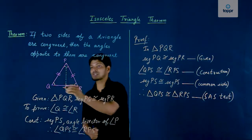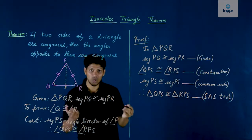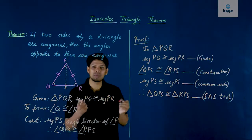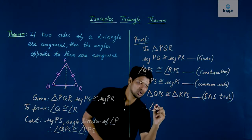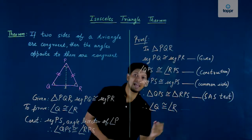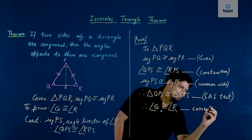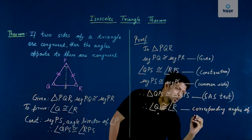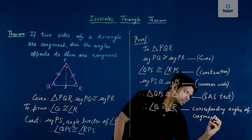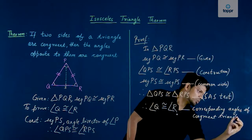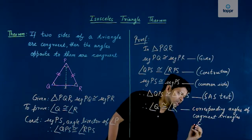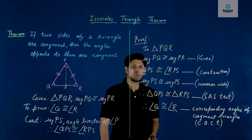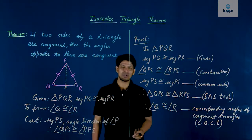Now that we have proved that triangles QPS and RPS are congruent, these two angles will also be congruent. Therefore, angle Q is congruent to angle R, as they are corresponding angles of congruent triangles. So we have proved that angle Q is congruent to angle R.